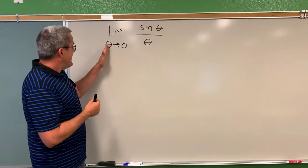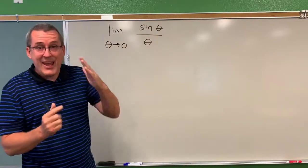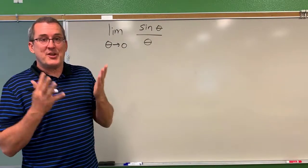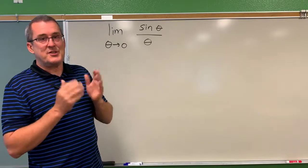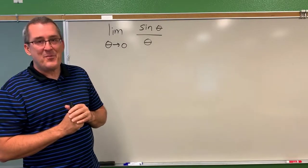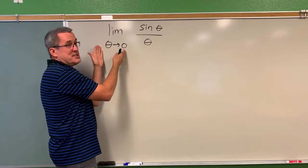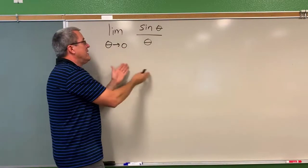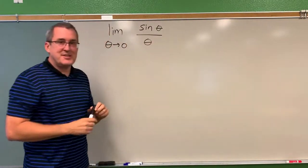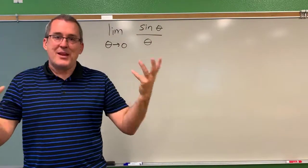So can you imagine an input quantity being an angle measure, an angle measure getting closer and closer to zero but not equal to zero? We want to examine if we input angle measures close to zero radians, then what would this function sine theta over theta, how would it behave?